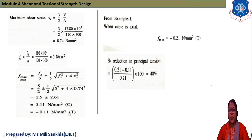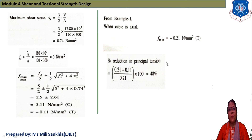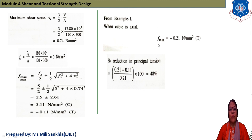The results are: f_max = +5.11 N/mm² (compressive) and f_min = −0.11 N/mm² (tensile). From Example 1, the tensile stress with a straight cable was −0.23 N/mm². Reduction in principal tension with curved cable = (0.21 − 0.11)/0.21 × 100 = 48%. The curved cable thus achieves a 48% reduction. We stop here and will start a new topic in the next session.